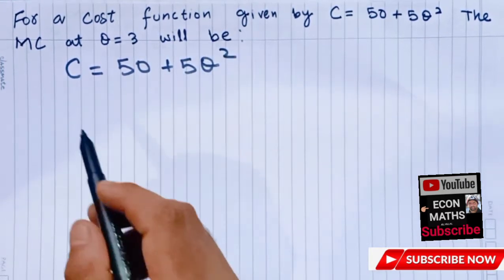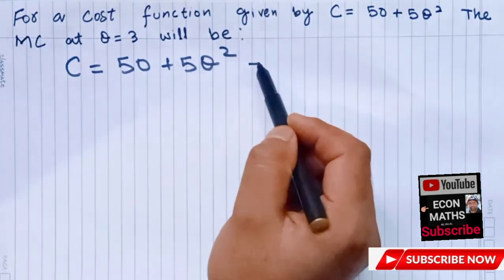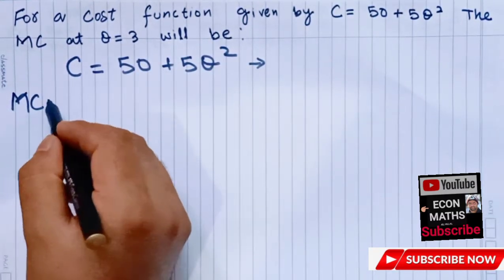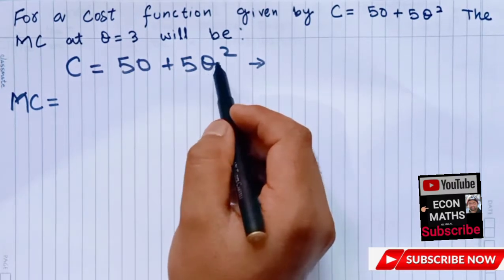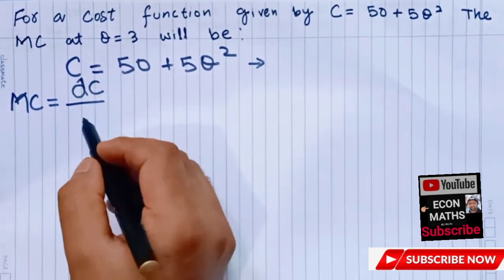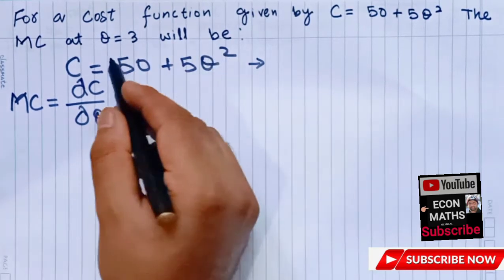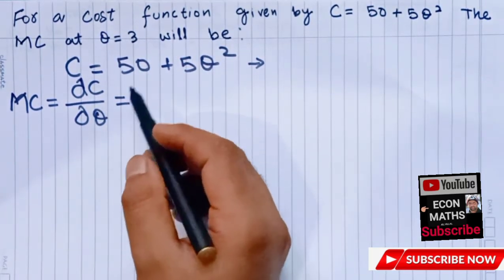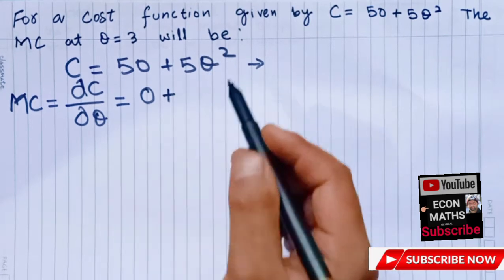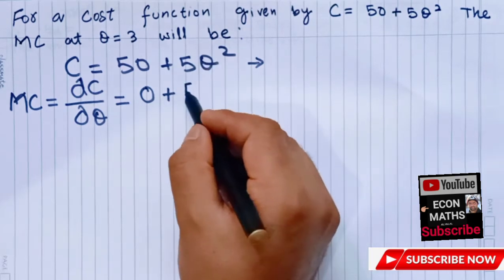To get the marginal cost, we differentiate this total cost with respect to quantity. That means marginal cost is equal to the derivative of total cost with respect to quantity, that means dC divided by dQ. Differentiating this function with respect to quantity, the derivative of constant is 0, plus this 2 will become coefficient by power function rule, this will become 5Q.